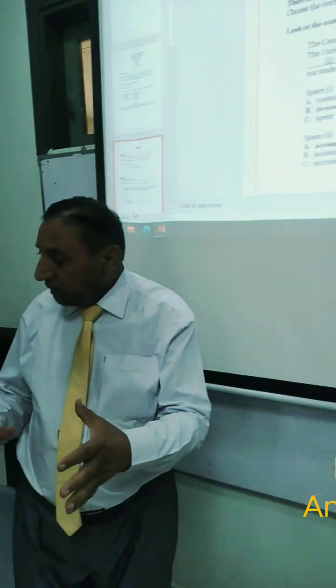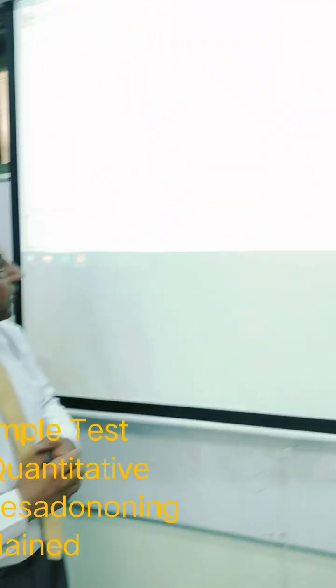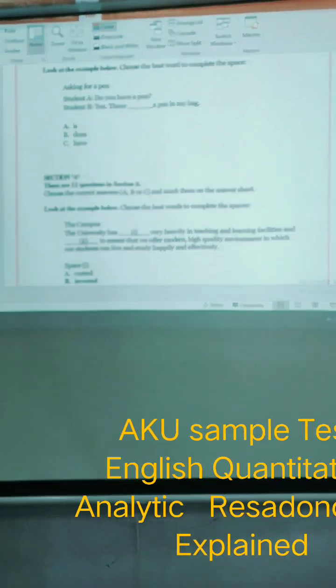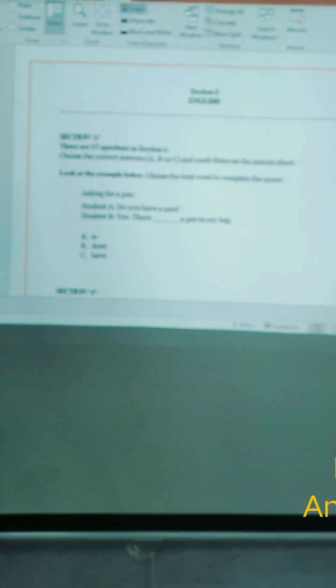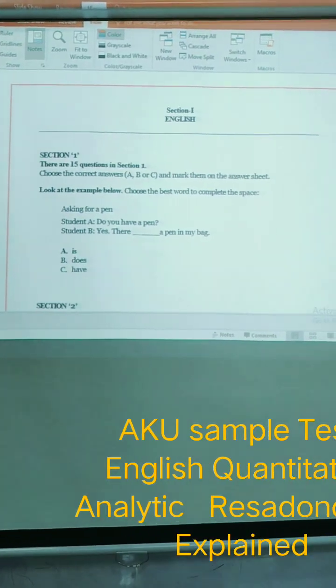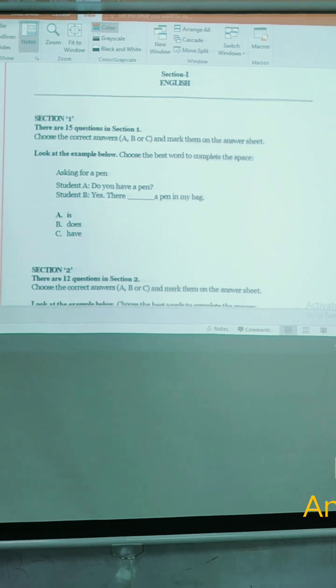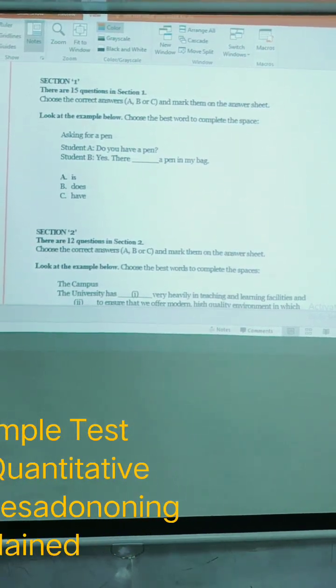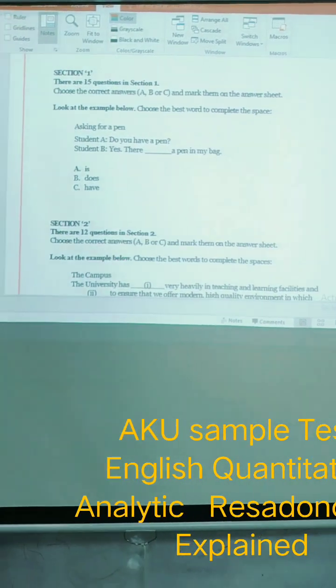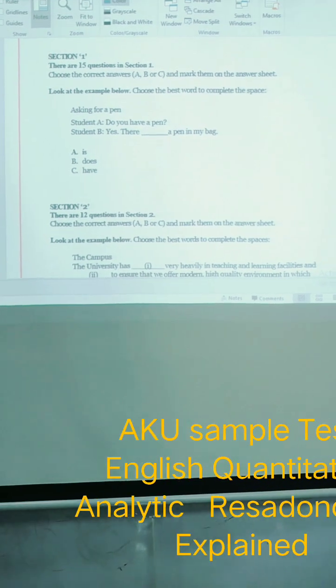So now coming to the second question. The first question is, choose the correct answer A, B, or C and mark them on the answer sheet. Look at the example below. Choose the best word to complete the space. It is basically fill in the blank position.